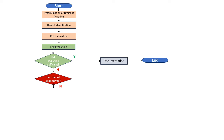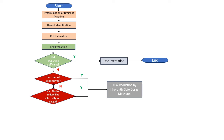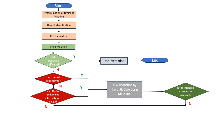If the hazard can be removed, or if it cannot be removed but can be reduced by inherently safe design, then we proceed to risk reduction by inherently safe design measures. After applying this step, we again ask: is the intended risk reduction achieved? If not, it goes back to this stage and we consider whether the risk can be reduced by guards or protective devices.